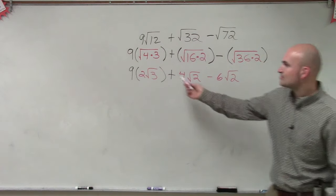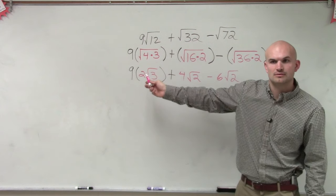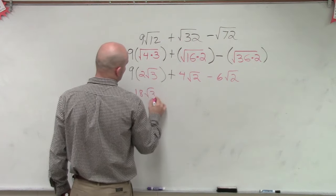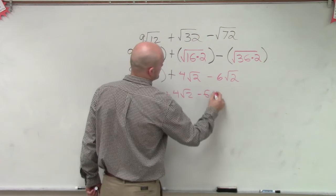Now the reason why I kept these parentheses out here, because, ladies and gentlemen, 9 times 2 is what? 18. So really, this is 18 square root of 3, plus 4 square root of 2, minus 6 square root of 2.